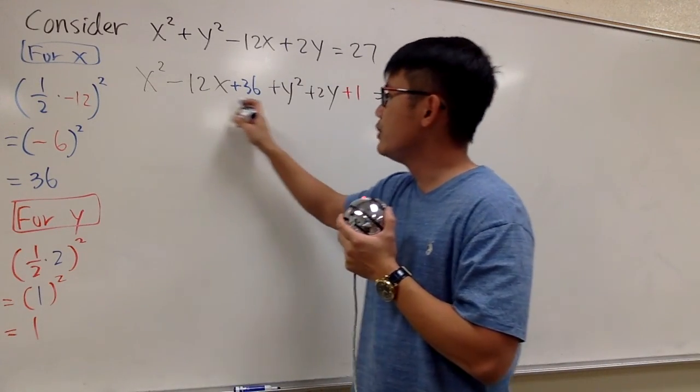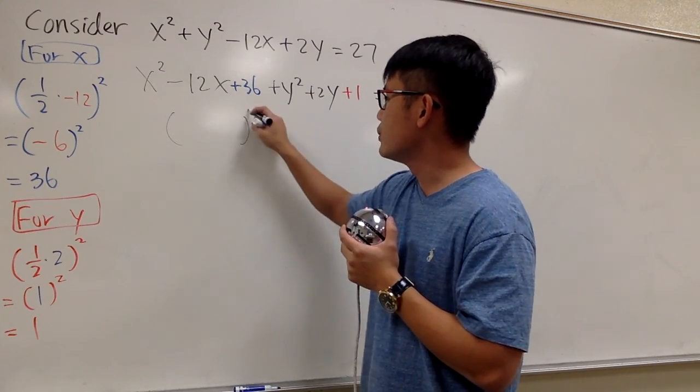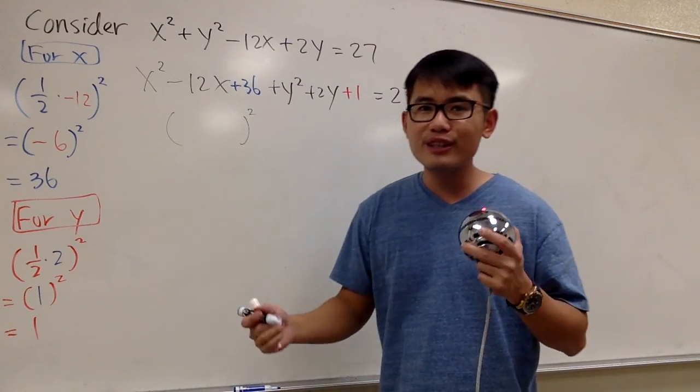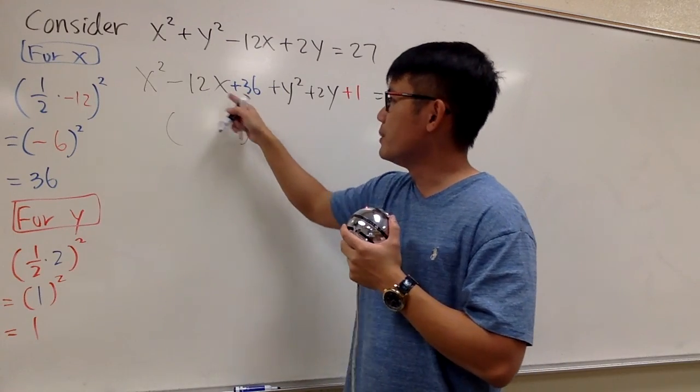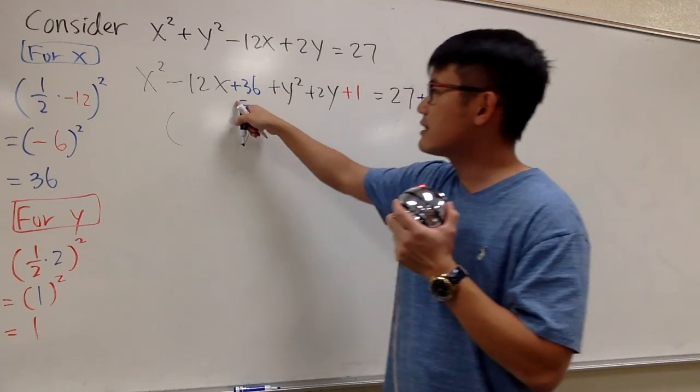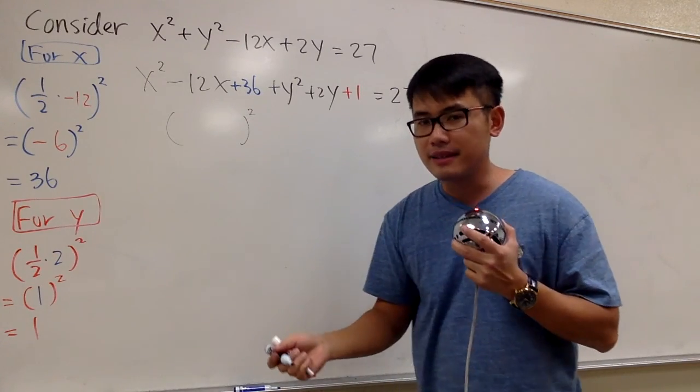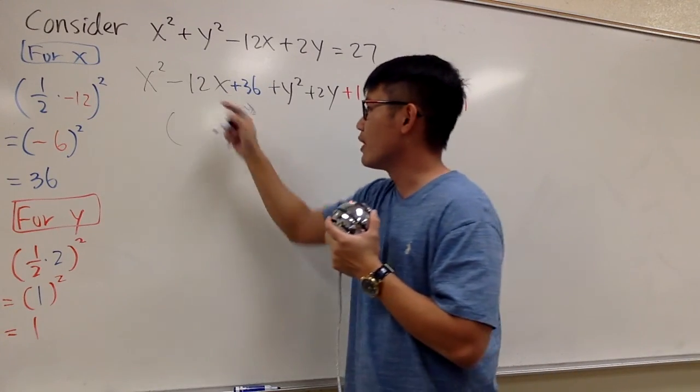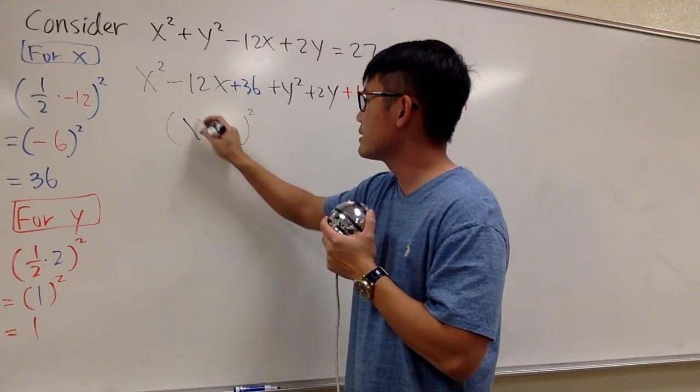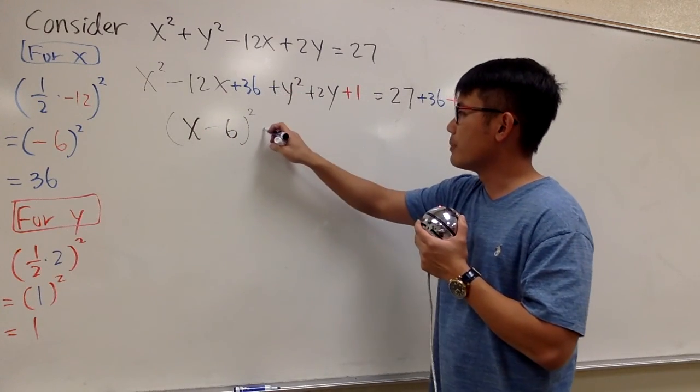Because if you look at these three terms right here for the x, we can write this as something to the second power. We can factor it, and this right here is going to be x minus 6 times x minus 6. Because negative 6 times negative 6 will give us positive 36. Negative 6 minus 6 will give us negative 12. So this right here is x minus 6 squared.